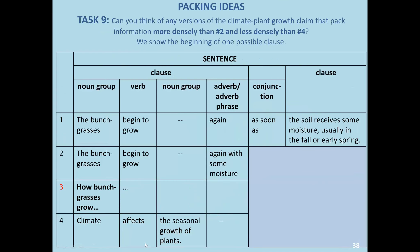Now we'd like to expand our map of this relationship between climate and grasses. Can you think of any versions of this claim that pack information more densely than two but less densely than four? We show the beginning of one possible clause here: 'how bunch grasses grow' — could you try to complete this packing?